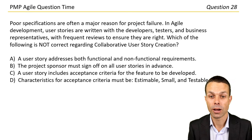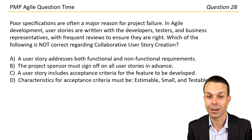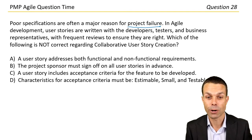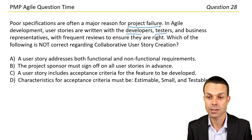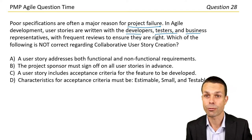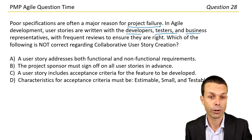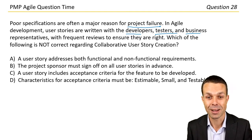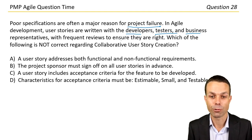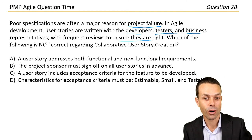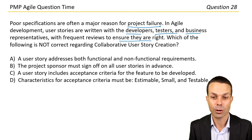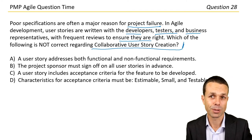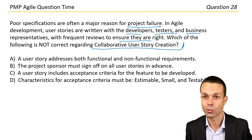Poor specifications are often a major reason for project failure. In agile development, user stories are written with developers, testers, and business representatives with frequent reviews, ensuring they are right. Which of the following is not correct regarding collaborative user story creation?